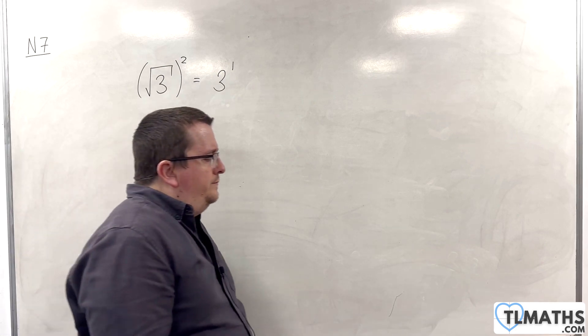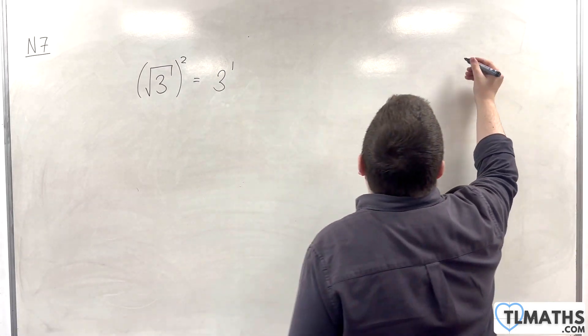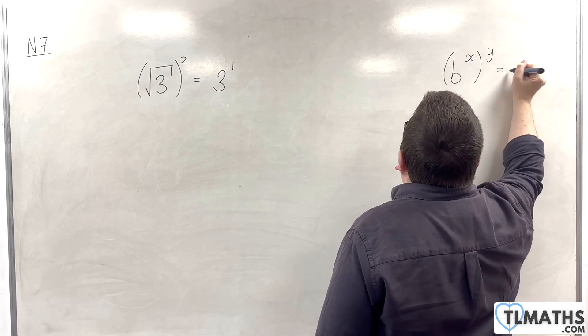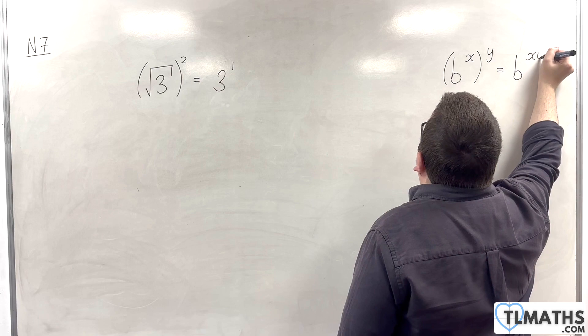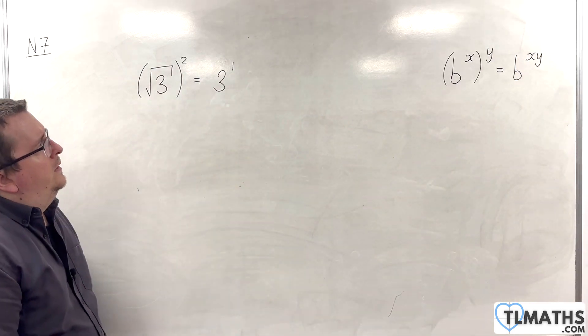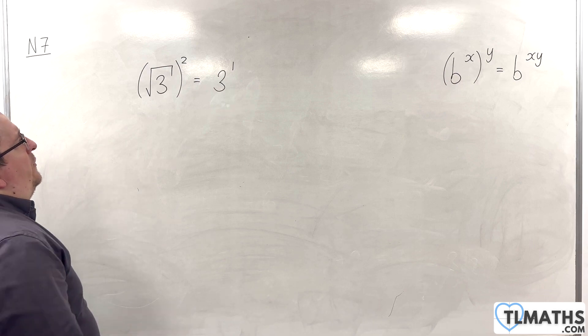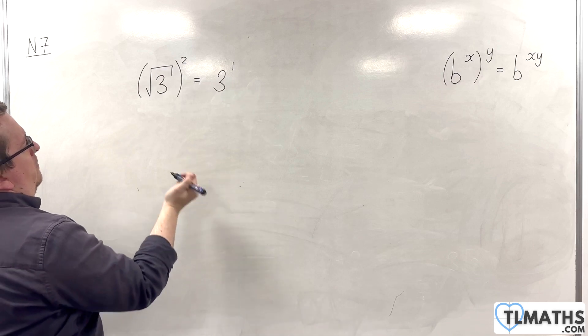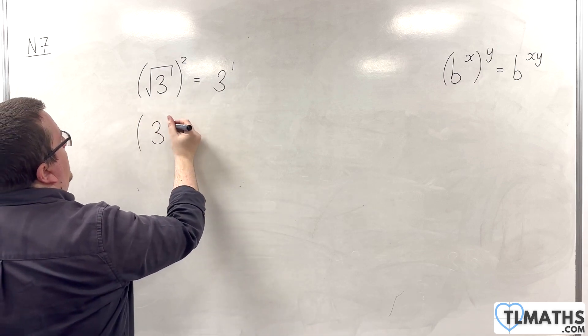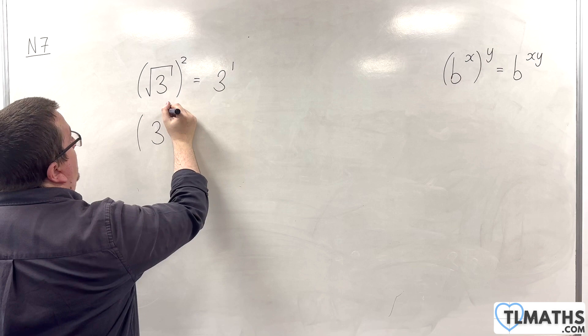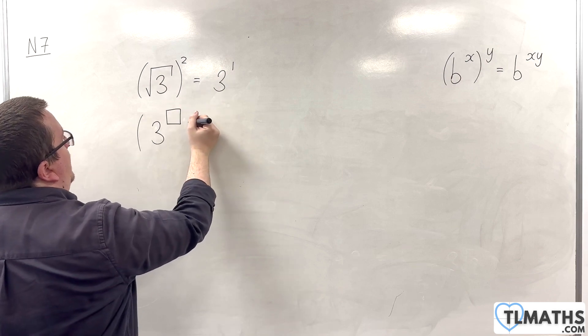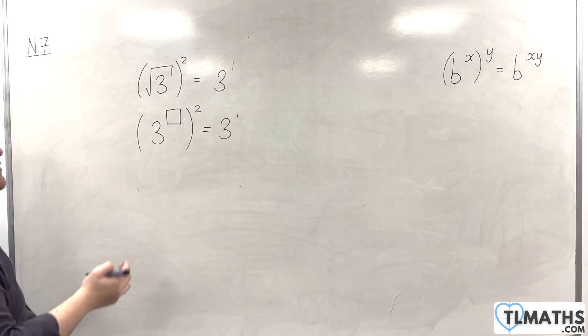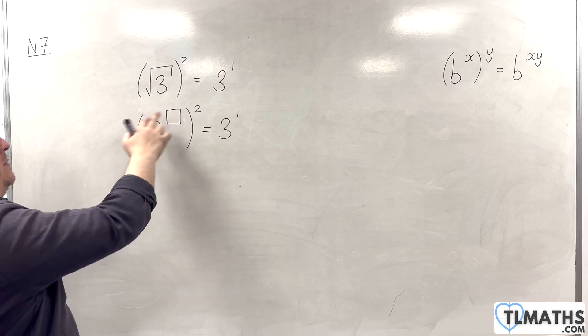And I want to recall that we have an index law that says b to the power of x to the power of y is b to the power of x times y. So, the idea here is, would I be able to write down that exact same expression, but in a form of 3 to the power of something, some mystery value here, squared is equal to 3 to the 1? Rather than writing it square root of 3, I can write it as 3 to the power of something.